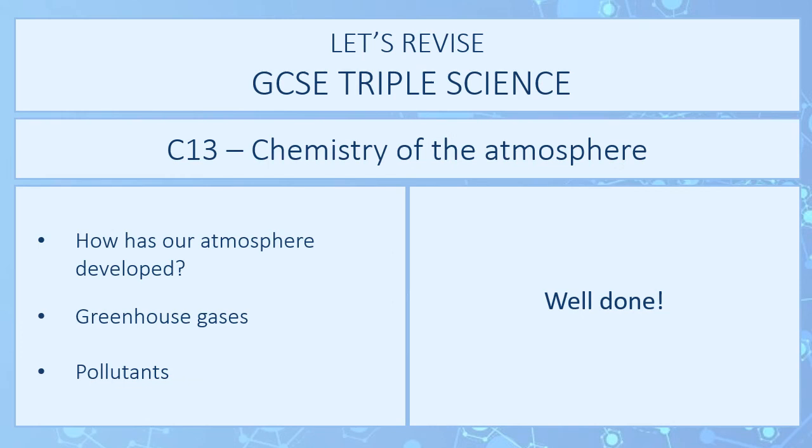We've come to the end of this revision session on C13 chemistry of the atmosphere for triple science. We've covered three topics today: how our atmosphere has developed, greenhouse gases and how they're linked to climate change, and atmospheric pollutants. If you've still got a bit of time left, you might want to revise some of those concepts in more detail — for example, create a mind map or make some revision questions for a partner to try.